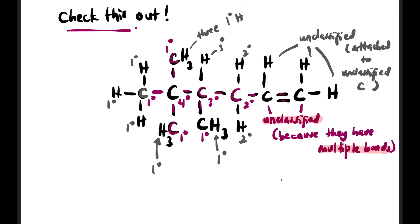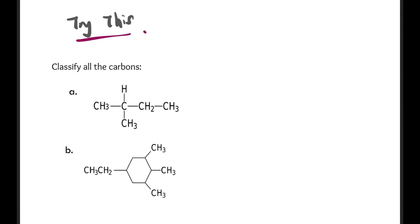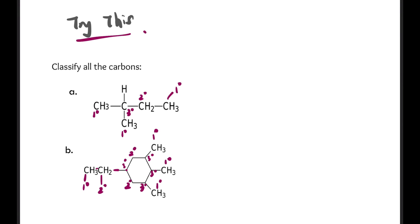Let's try classifying all carbons in given structures. For structure A: the end carbons are primary, the middle one is tertiary (3 carbons attached), and there's also secondary. For structure B, which involves a hexagon (ring) — remember there are actual carbons at every vertex of the ring, each with their own class. Some are tertiary, some are secondary, depending on how many carbons are attached to each. To make it easier, draw out the full skeleton and label each carbon.